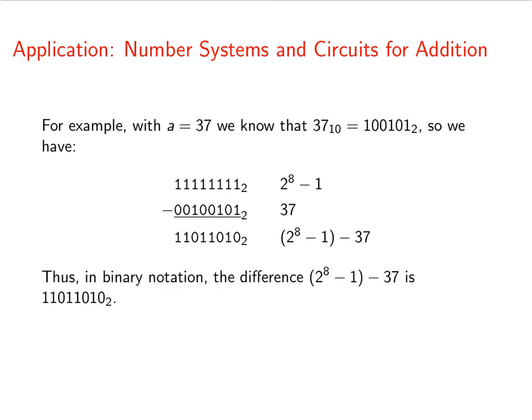So in binary notation, the difference 2 to the 8th minus 1 minus 37 is 11011010.